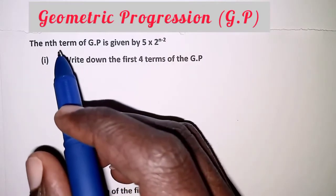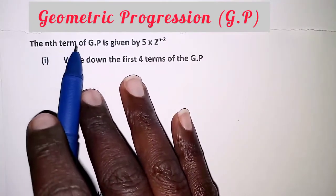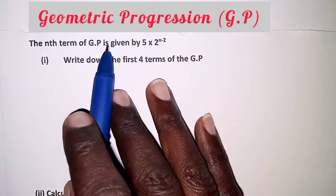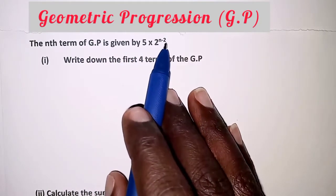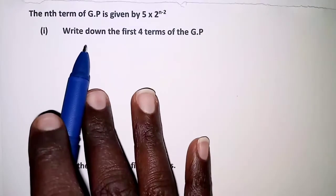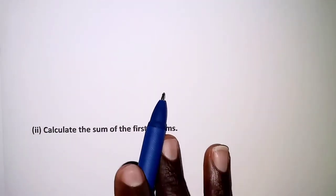The question today is on geometric progression, and the question reads: the nth term of a GP is given by 5 × 2^(n-2). Then, part (i): write down the first four terms of the GP, and